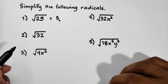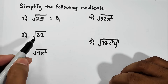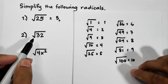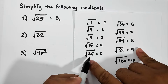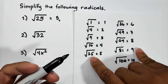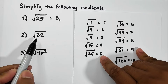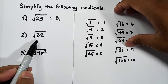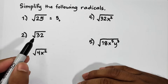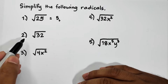Now let's go with item number 2. Item number 2 is the square root of 32. Compared to 25, which belongs to our list where we can get a perfect root, 32 is not included there, meaning 32 is not a perfect square. So the question is: how are we going to simplify a radical that is not a perfect square?